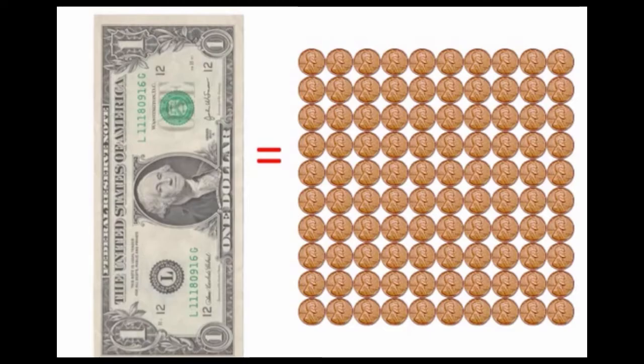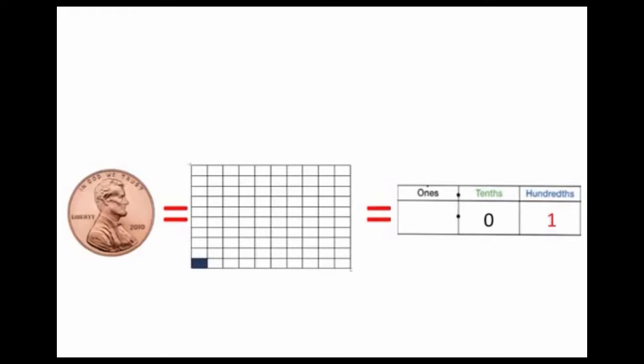Now, we take a look here. We have a dollar. And a dollar is equivalent to one hundred pennies. So each of those hundred pennies have a value of one hundredth of a dollar. So if we look here, I have the penny. The penny is equivalent to one of these one hundredth squares, which is equivalent to a one in the hundredths place on this place value chart.